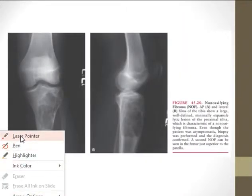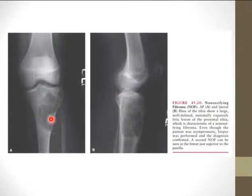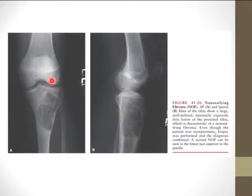Another example shows a very large non-ossifying fibroma with a lytic well-defined corticated lesion in the metaphysis of a long bone. However, the differential diagnosis can include aneurysmal bone cyst especially if the epiphyseal plate is still open. If the lesion abuts the articular surface, a giant cell tumor should be considered.